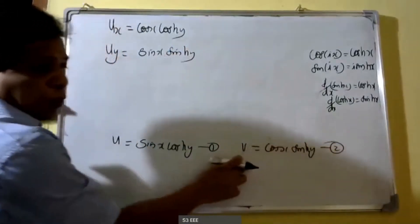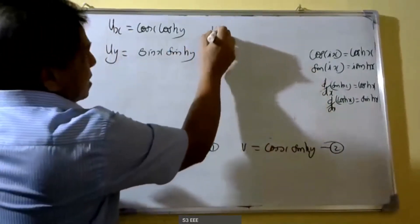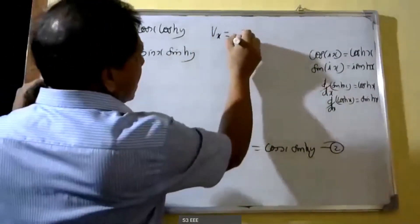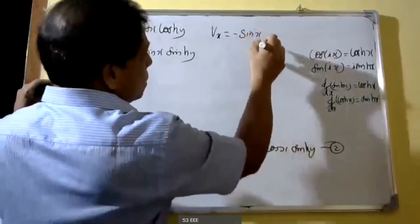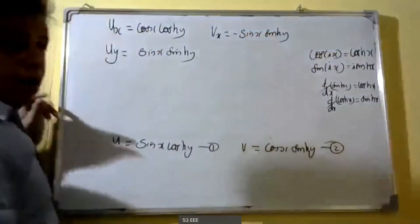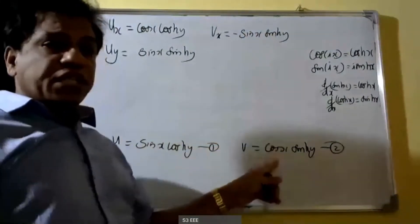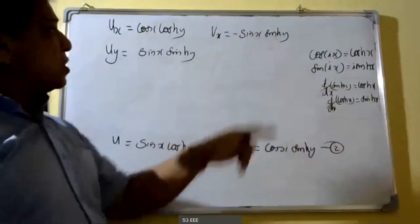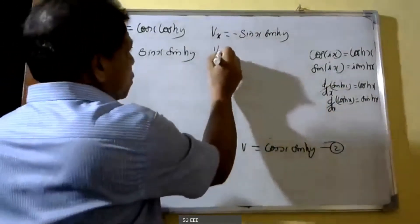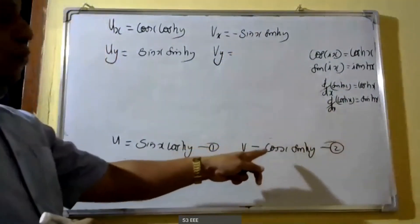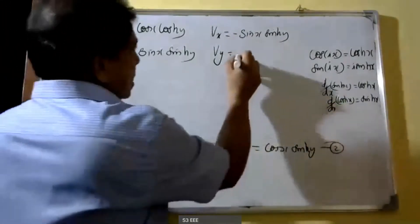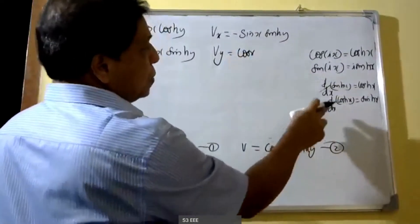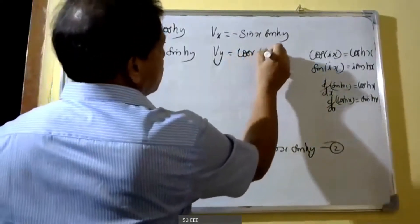Similarly, differentiating equation 2 with respect to x: v_x = -sin(x)·sinh(y), since cos(x) differentiates to -sin(x) and sinh(y) is constant. When we differentiate with respect to y: v_y = cos(x)·cosh(y), since the derivative of sinh(y) is cosh(y).